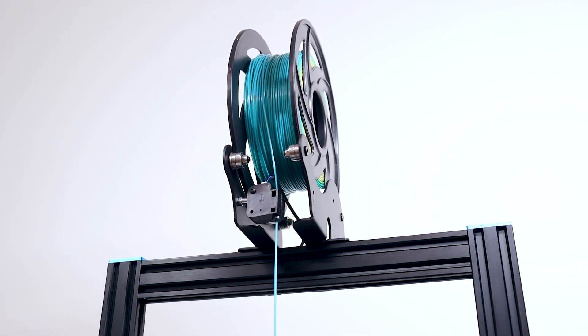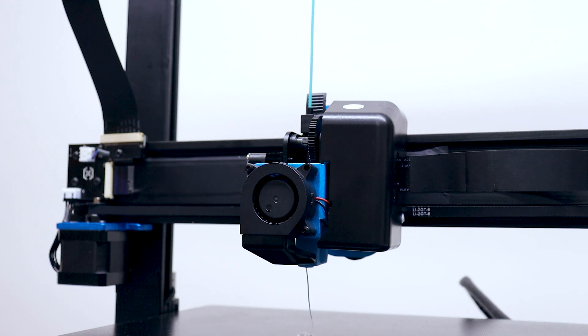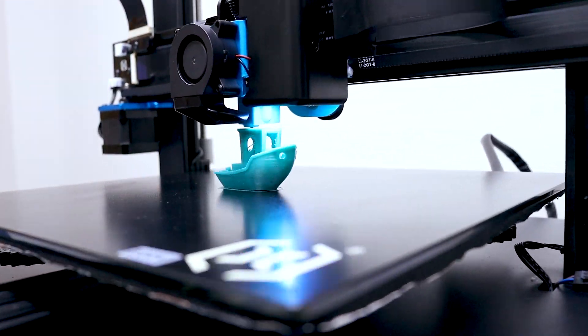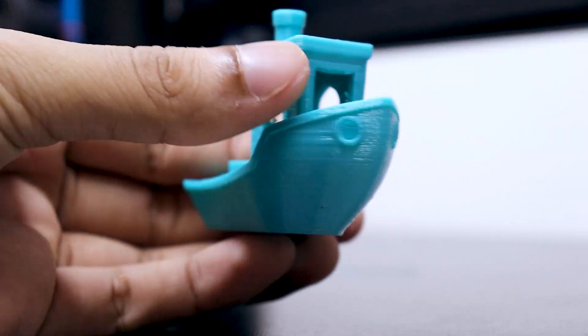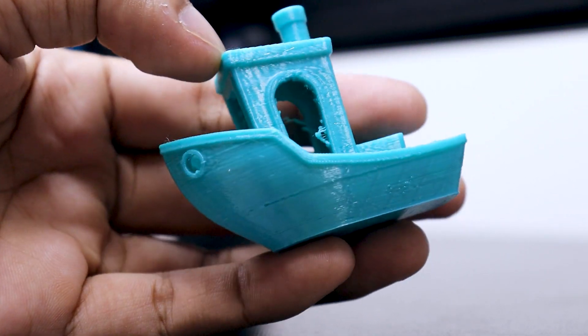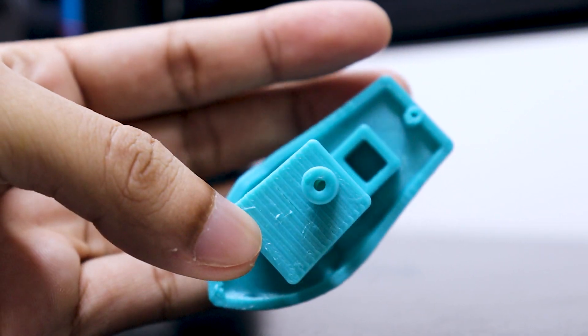Alright guys, now it's time to do some test printing. When it comes to PLA, the Sidewinder X1 is more than a solid choice. First I started with the 3D Benchy, and the print itself I think is okay, but there are some minor blemishes which can be fixed by tuning the settings.